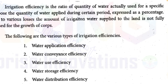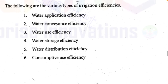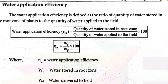Irrigation efficiency is the amount of water used divided by the amount of water delivered in a certain period. The first type is water application efficiency (Eta_A). Water application efficiency equals the quantity of water stored in the root zone divided by the quantity of water applied to the field, multiplied by 100%. Eta_A = WS / WF × 100%.